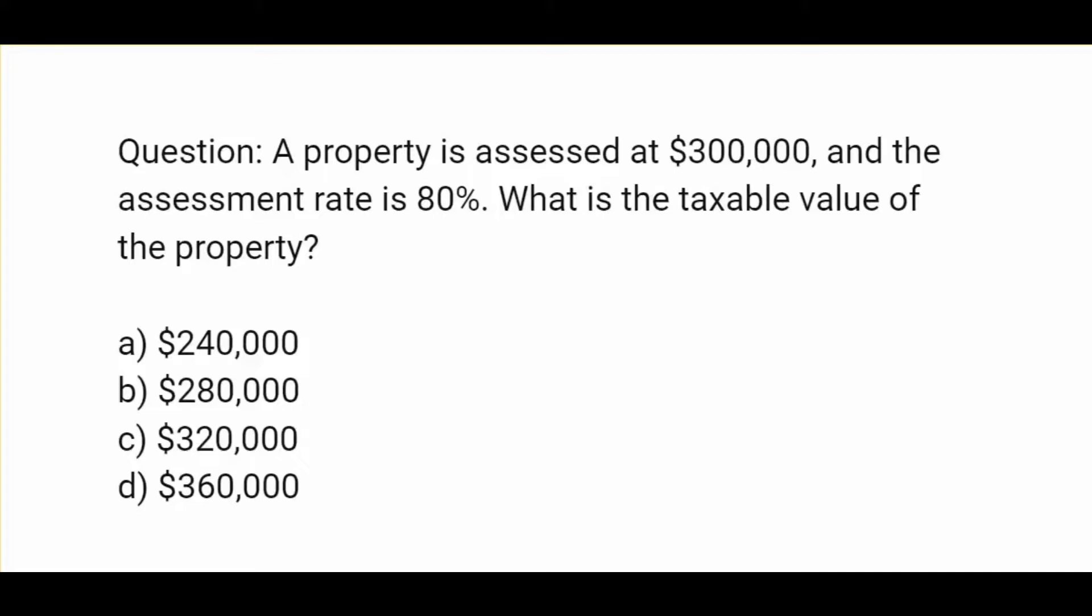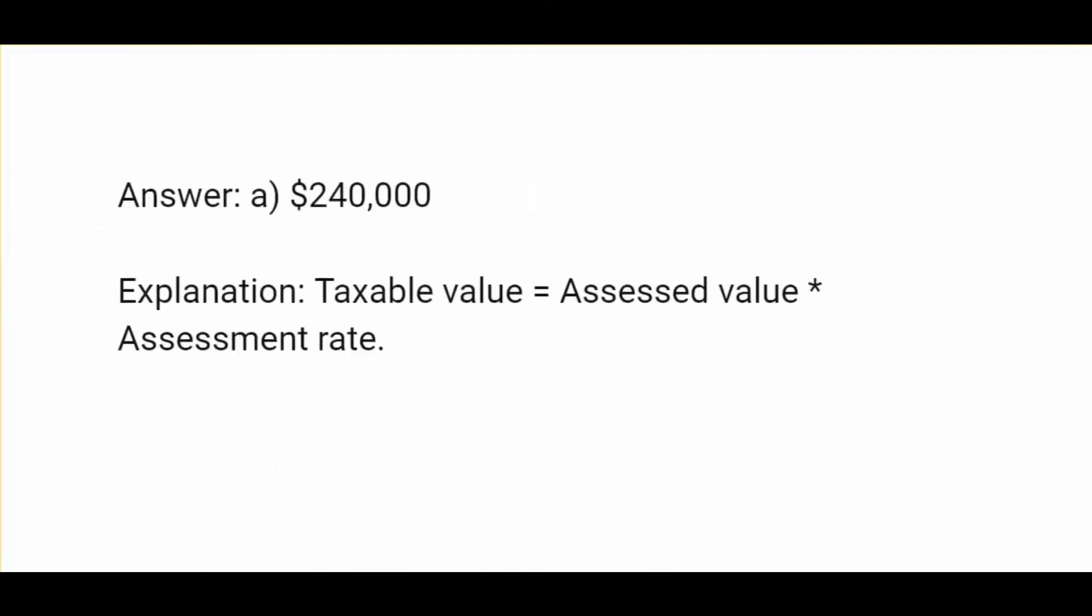A property is assessed at $300,000 and the assessment rate is 80%. What is the taxable value of the property? Options are $240,000, $280,000, $320,000, or $360,000. The answer is $240,000. Taxable value equals assessed value times assessment rate.